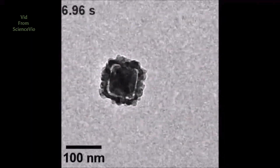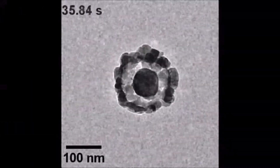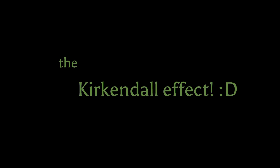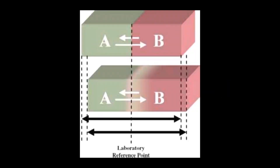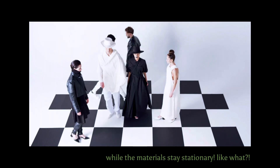This doesn't happen, however, and the materials stay stationary because of a lattice translation known as the Kirkendall effect. In this, the diffusing atoms spread into vacancies, where they basically switch places and allow things to balance.